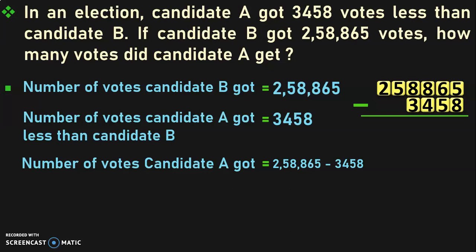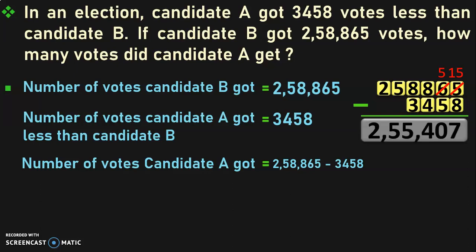Begin the subtraction from the 1s place. 5 minus 8 cannot be done because 5 is lesser than 8. So, we move to the 10s place and regroup 6 10s — it becomes 5 10s and 10 1s. We already have a 5 in the 1s place, so 10 plus 5 will be 15 1s now. 15 minus 8 is 7. 5 minus 5 is 0. 8 minus 4 is 4. 8 minus 3 is 5, and the remaining numbers 5 and 2 are written down as such. So, what is the answer? 2,55,407.